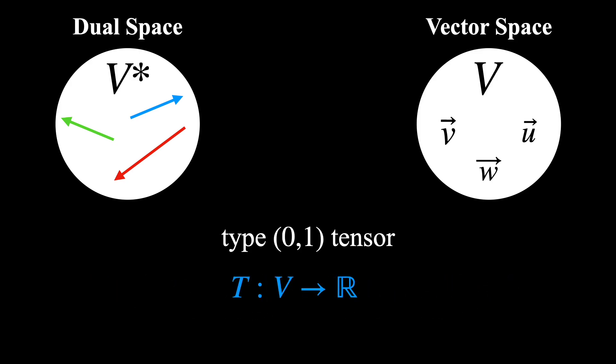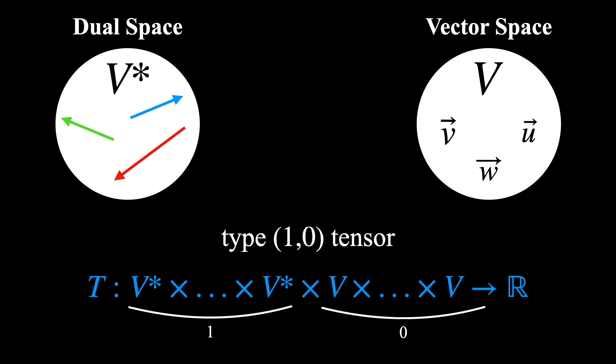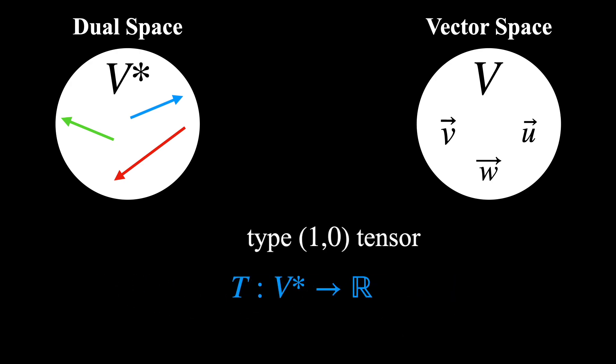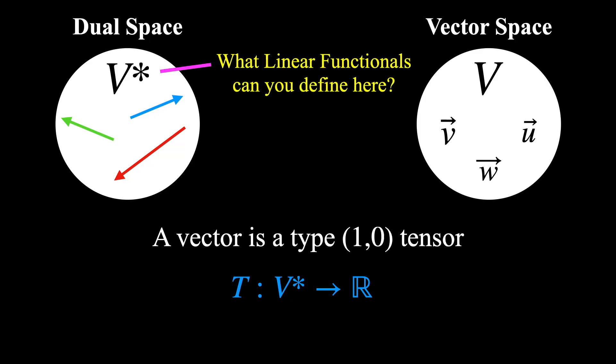But, this is actually just a dual vector. And the reason is that once you construct a dual space, if you then ask, what are all the linear functionals that you can define on the dual space? So what is the dual space of the dual space? It turns out that you end up back at the original vector space.